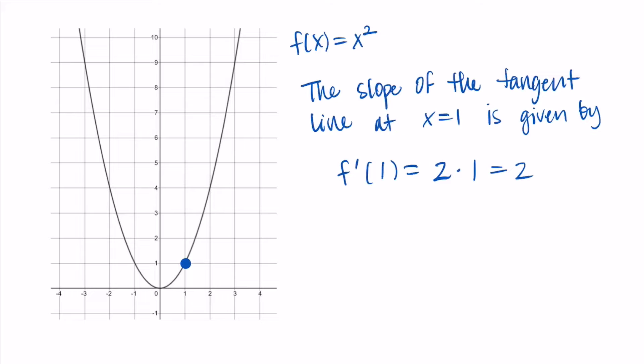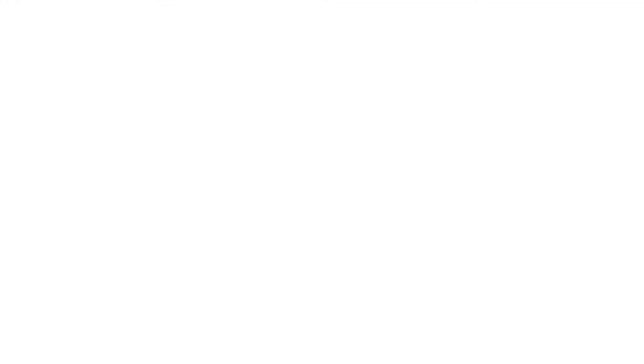This slope should make sense if we look at a sketch of the tangent line. I've drawn the tangent line here and if we go up 2 over 1, up 2 over 1, up 2 over 1, we can see that this aligns with points on the tangent line. So we can feel confident that the derivative at x equals 1 is 2, the slope of the tangent line at 1 is 2.